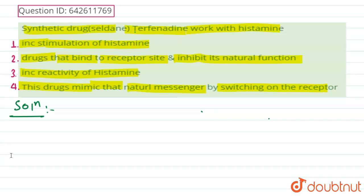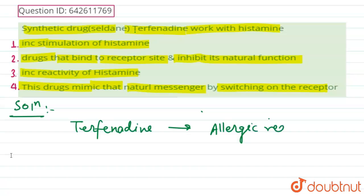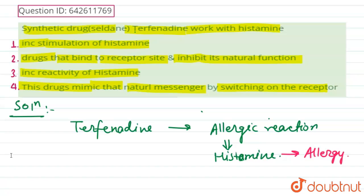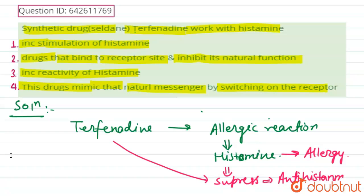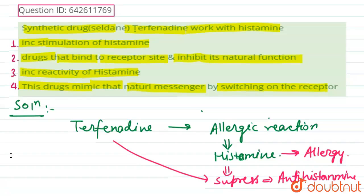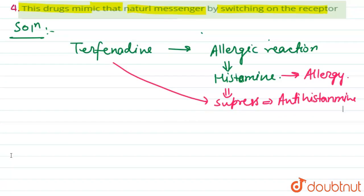Terfenadine is used in allergic reactions. Histamine is responsible for allergy. Terfenadine suppresses the allergy, which means it acts as an antihistamine.